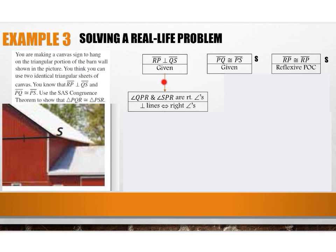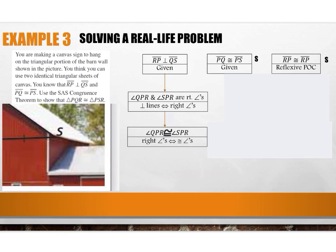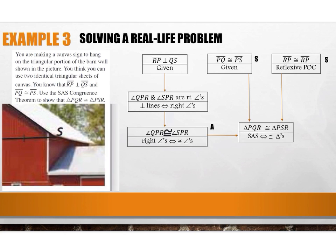From the perpendicular statement, I can conclude that angle QPR and angle SPR are right angles — perpendicular lines imply right angles. Because I have right angles, I have congruent angles: angle QPR is congruent to angle SPR, reason: right angles imply congruent angles. This is my included angle. I now have three statements — two sides and an included angle — all pointing to the final statement: triangle PQR is congruent to triangle PSR by side-angle-side. The proof is concluded.